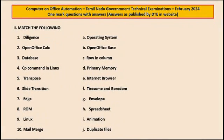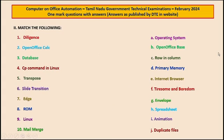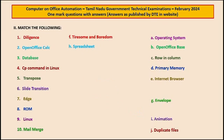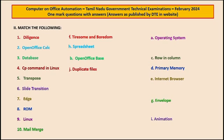Type 2: Match the following. Read the question and observe that serial numbers 1 to 10 are given for the questions and options A to J for the answers. Number 1: Diligence — the answer is F: Tiresome and boredom. Number 2: OpenOffice Calc — the answer is H: Spreadsheet. Number 3: Database — the answer is B: OpenOffice Base. Number 4: CP command in Linux — the answer is J: Duplicate files.